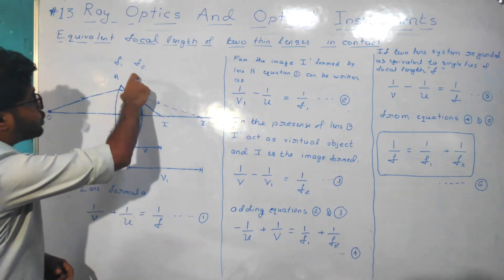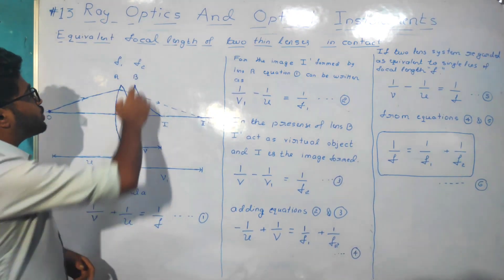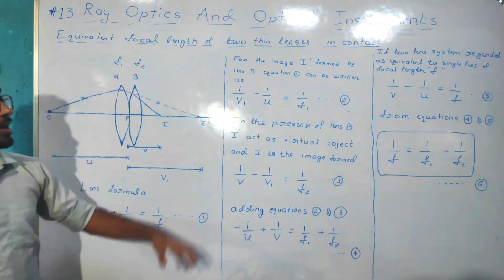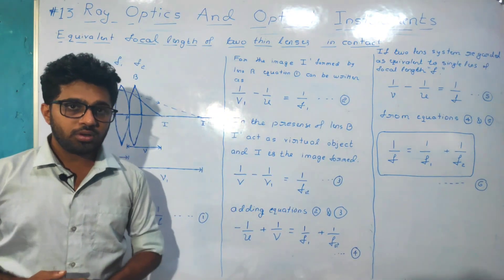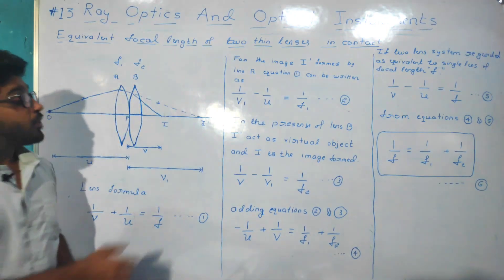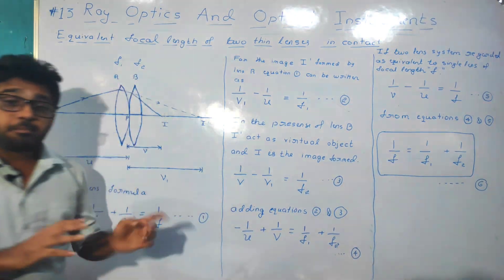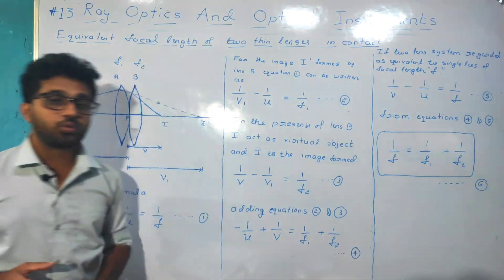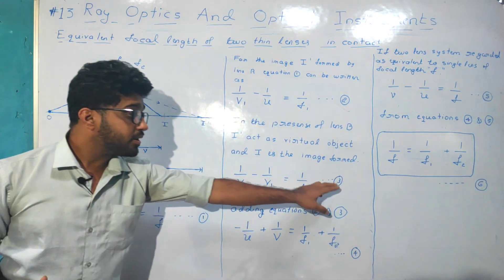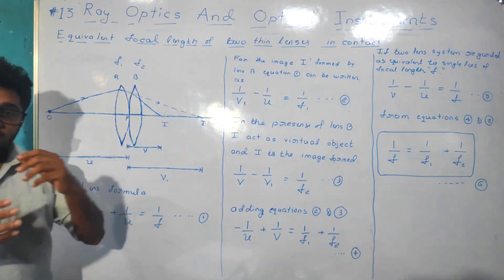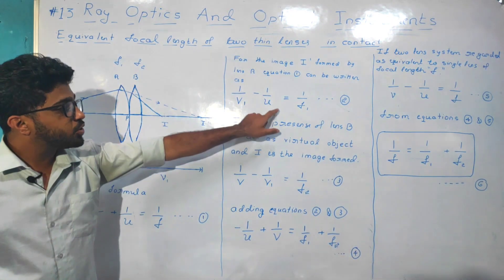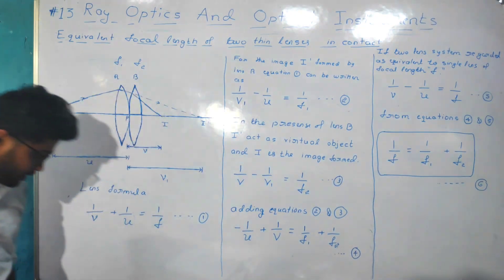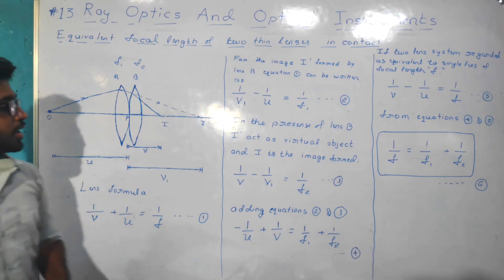For the second lens B, the focal length is F2. So we get equation 3, which is: 1 by v minus 1 by v1 is equal to 1 by F2. This is equation number 3.